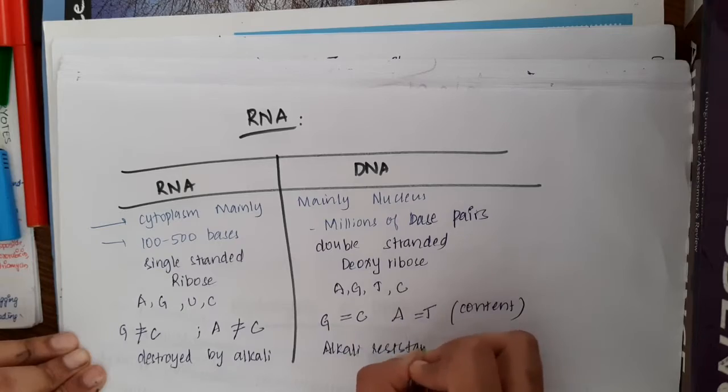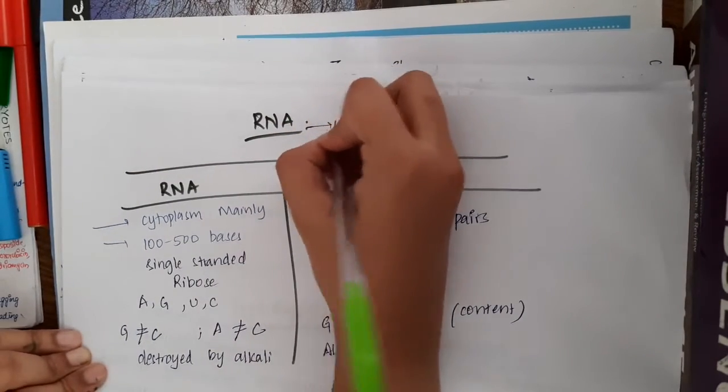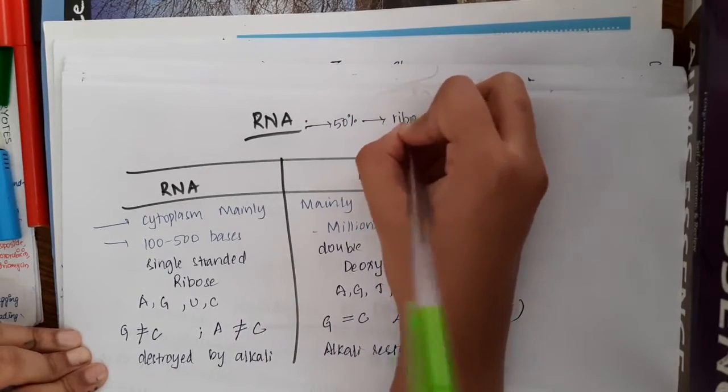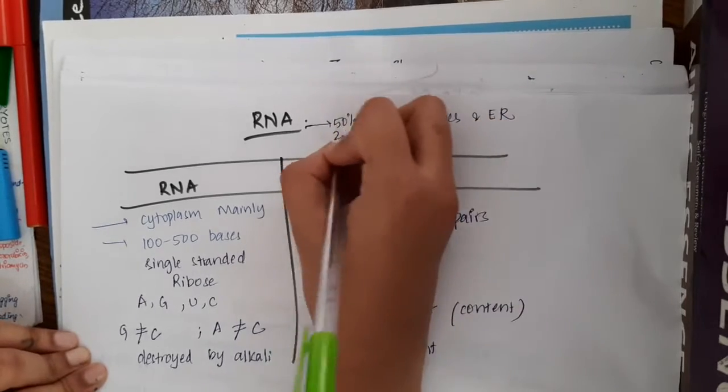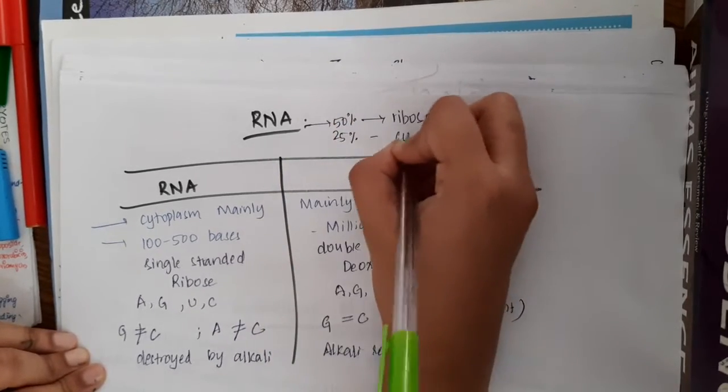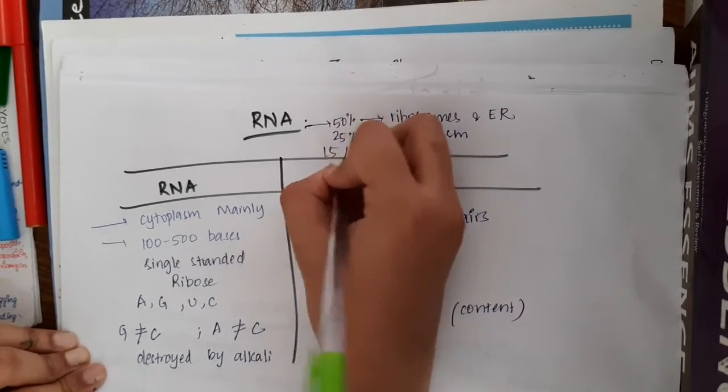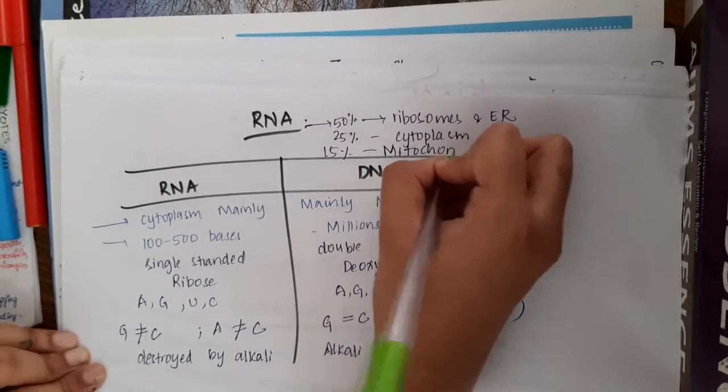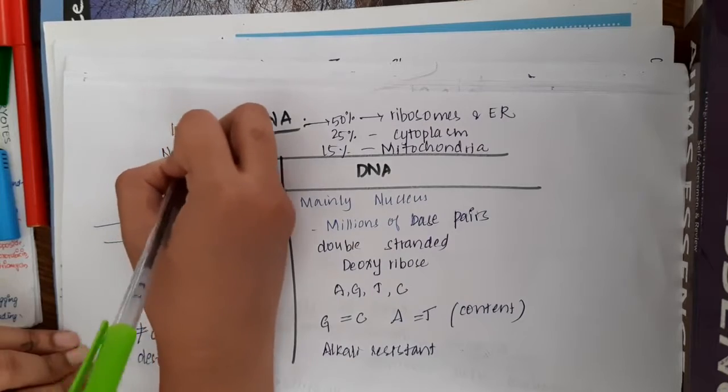These are the differences between DNA and RNA. If you see in RNA, 50% is present in ribosomes and endoplasmic reticulum, 25% is present in cytoplasm, 15% is present in mitochondria, and only 10% is present in nucleus.